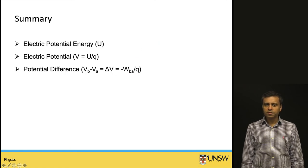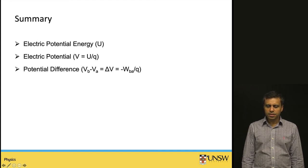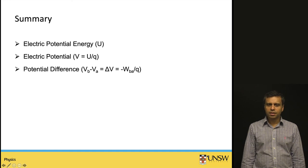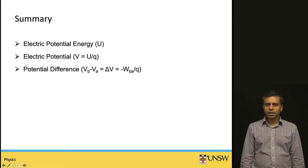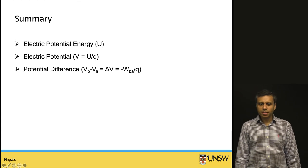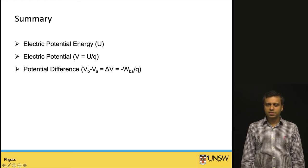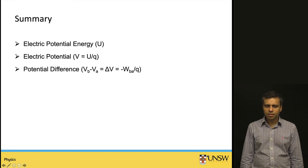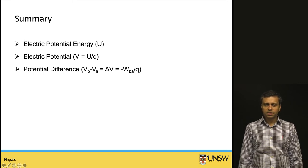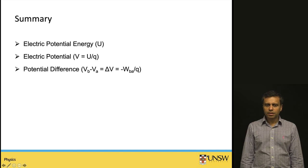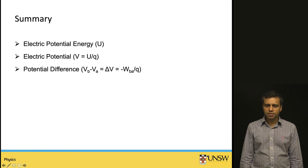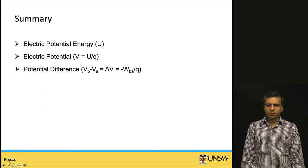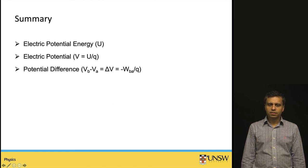A quick recap: we have looked at electric potential energy, which is analogous to gravitational potential energy but driven by the electric force. Electric potential is potential energy divided by charge — potential energy per unit charge. Potential difference, also called voltage, is the electric potential difference between two points, and it equals the negative of the work done to bring the charge between those two points divided by the charge q.